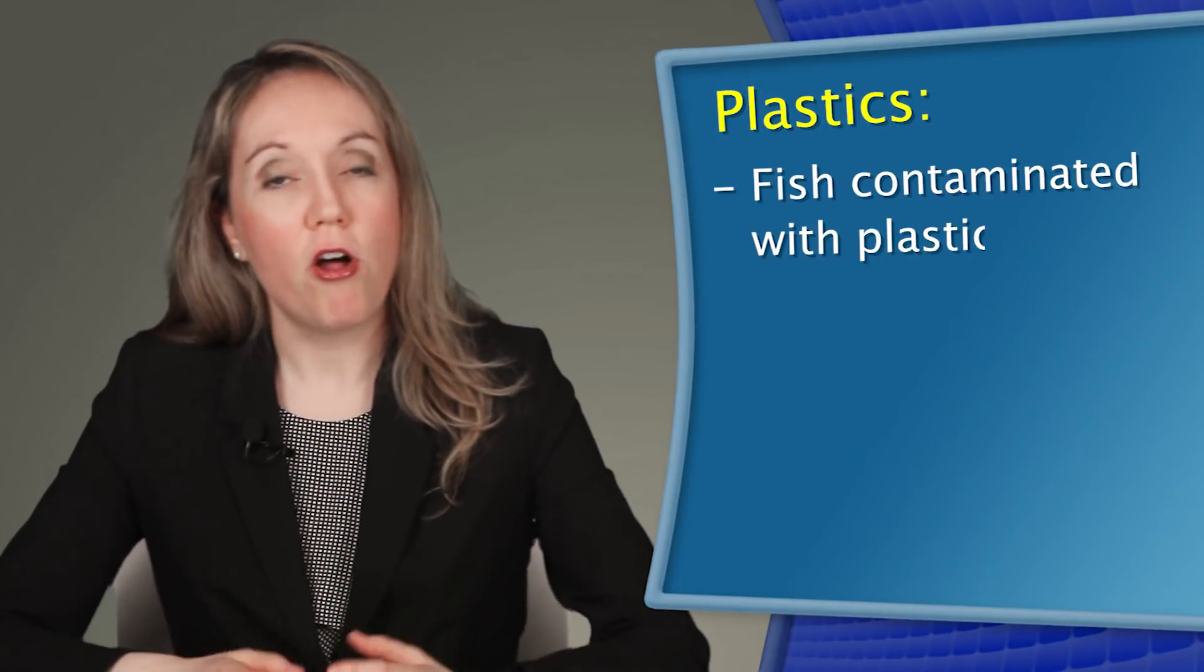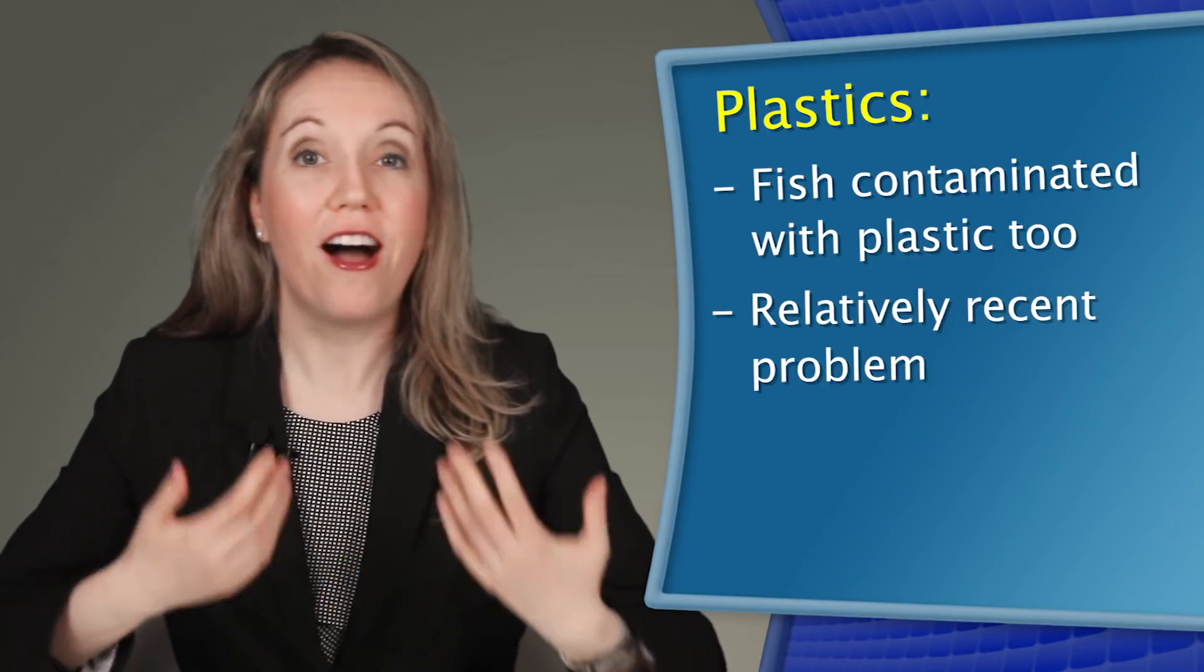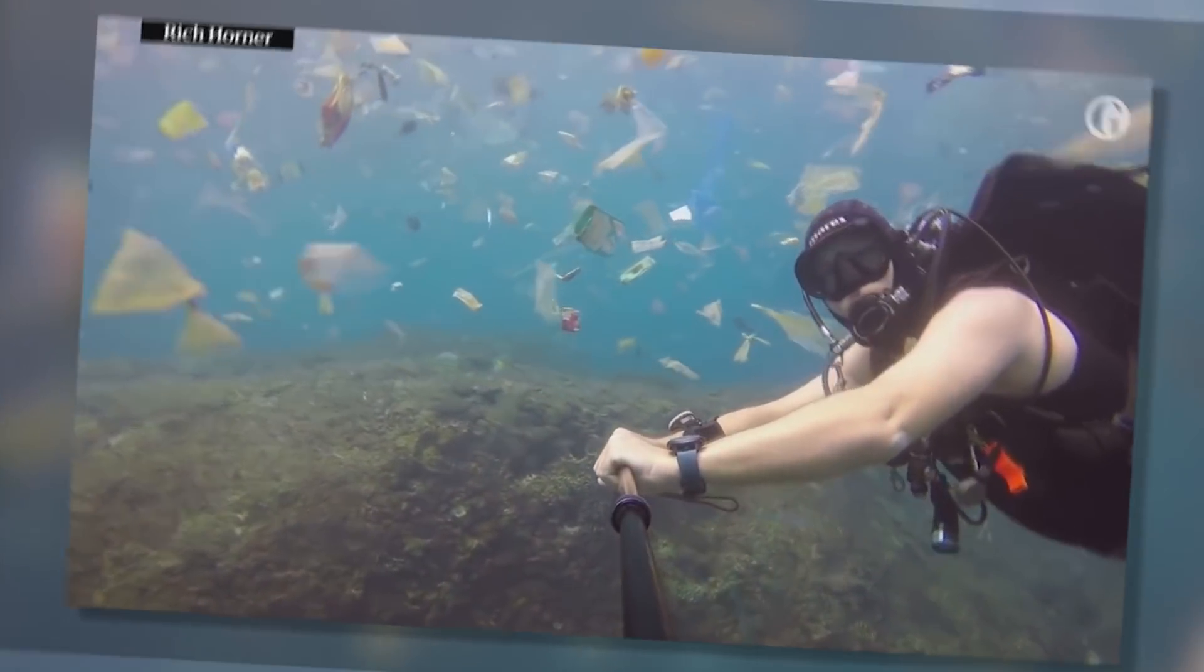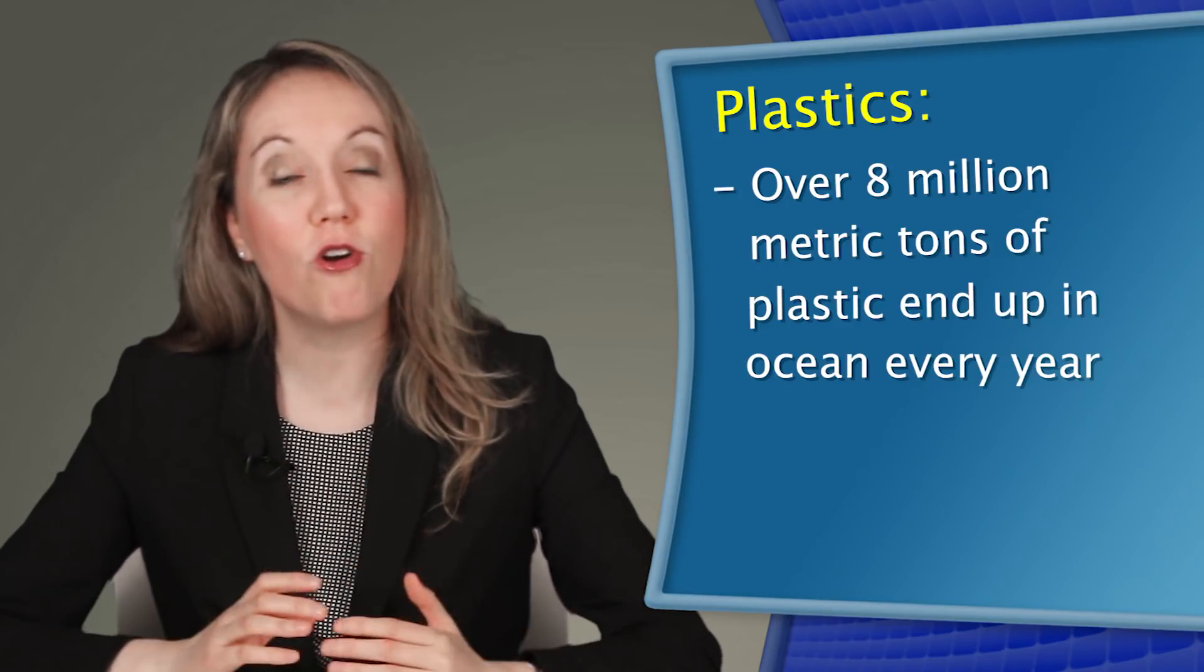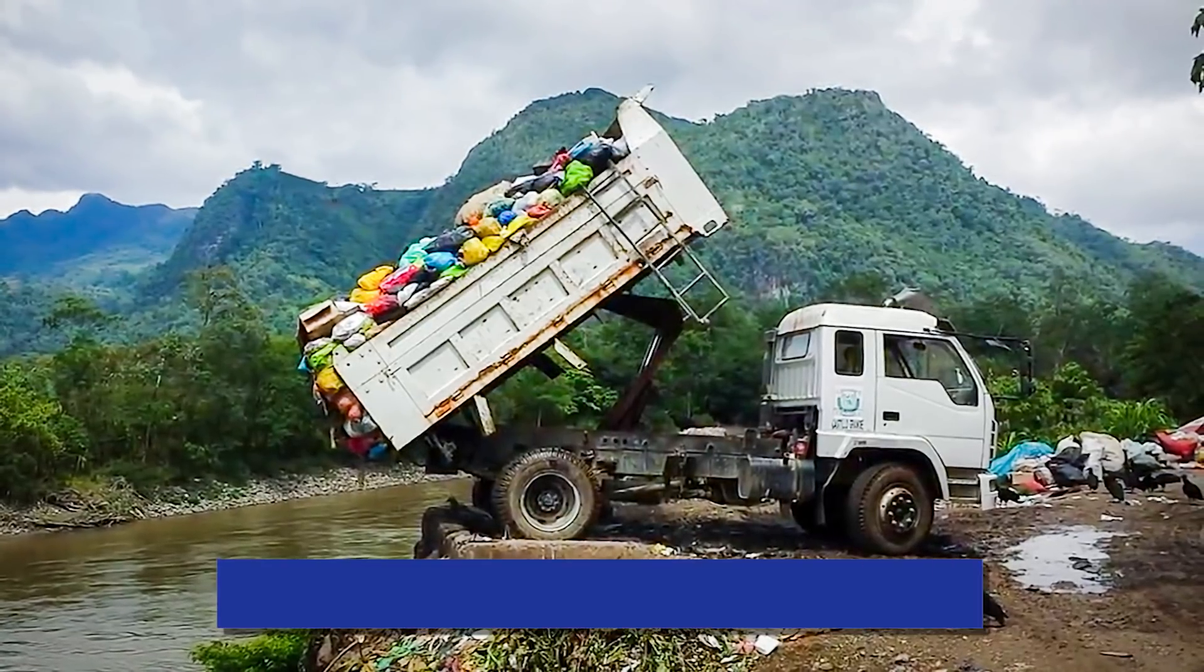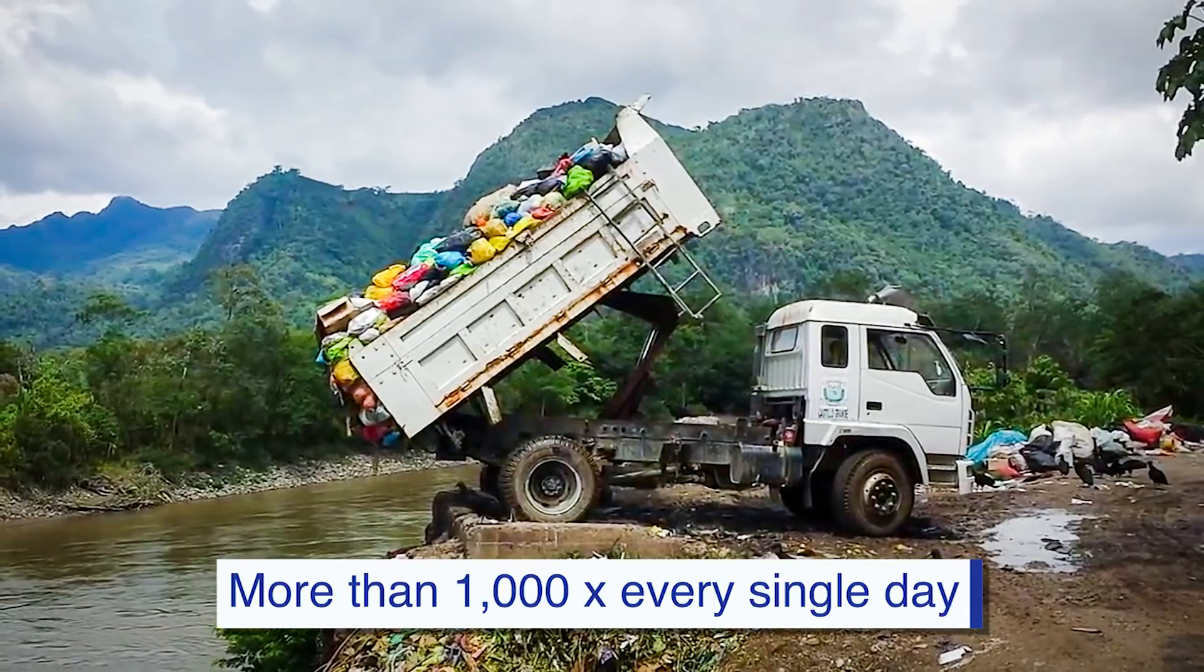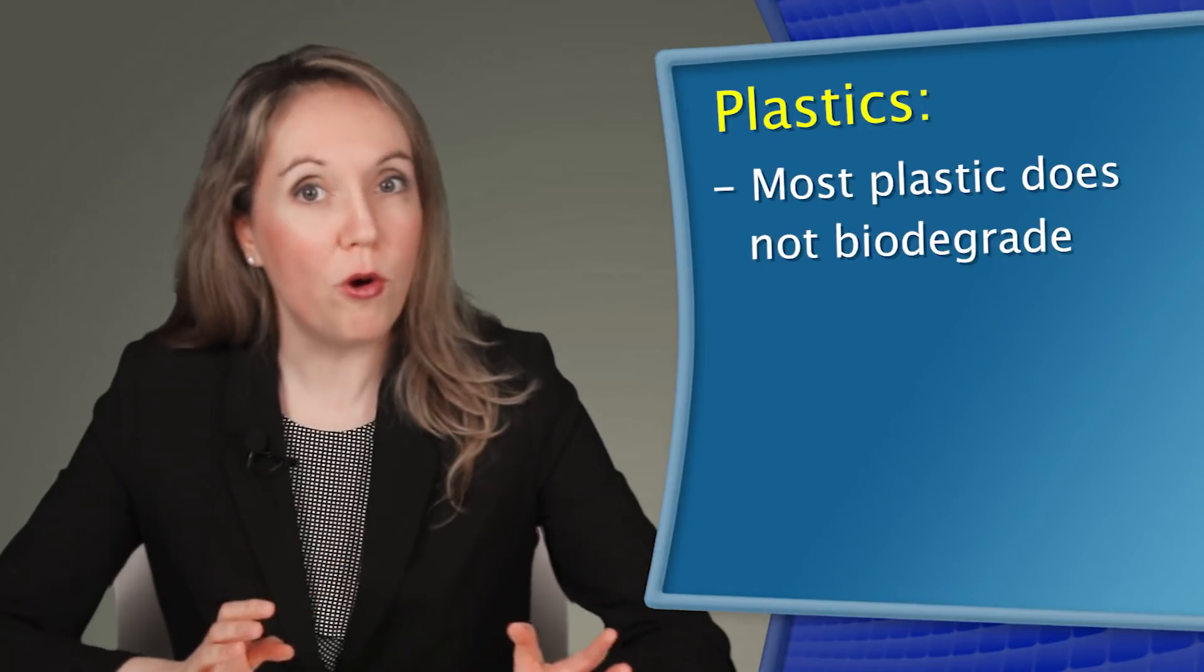Fish today are also contaminated with a lot of plastic. This wasn't a problem 50 or 100 years ago, but now it is. We have turned the oceans into nothing short of a plastic dump in the last few decades. Now over 8 million metric tons of plastic end up in the ocean every year. That's the equivalent of more than 1,000 garbage trucks filled with plastic going into the ocean every single day. And all this plastic doesn't go away either.